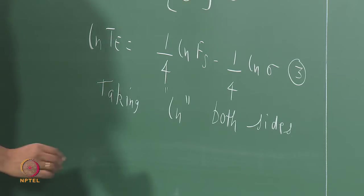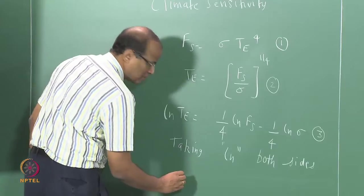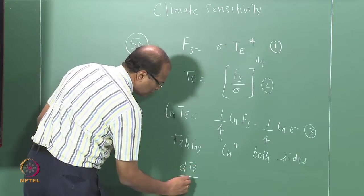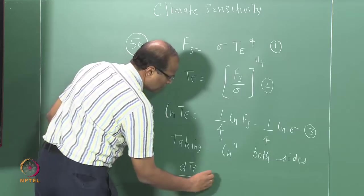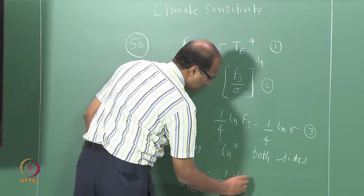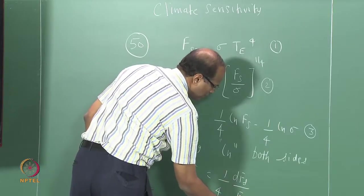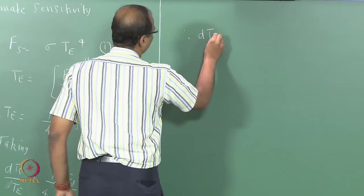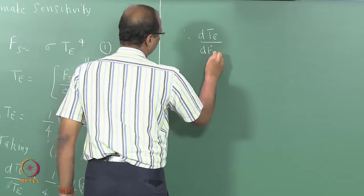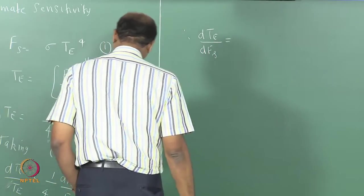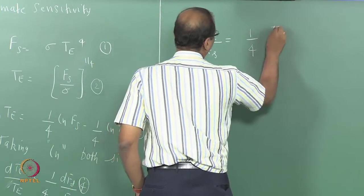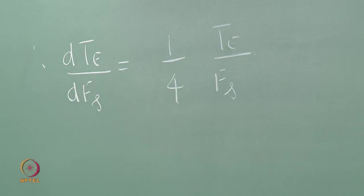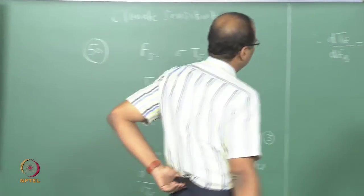What do you get? 1 by d e d d e by t e. Here. Is this correct? But we know that this is also equal to...